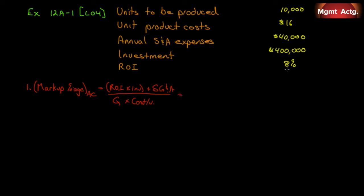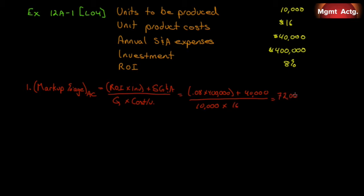Filling in what we know: our ROI is 8% on an investment of $400,000, so 0.08 × $400,000, plus our annual SG&A expenses of $40,000, divided by quantity of 10,000 units times our unit product cost of $16. That gives us $72,000 over $160,000, which equals 0.45. So our markup percentage is 45%.